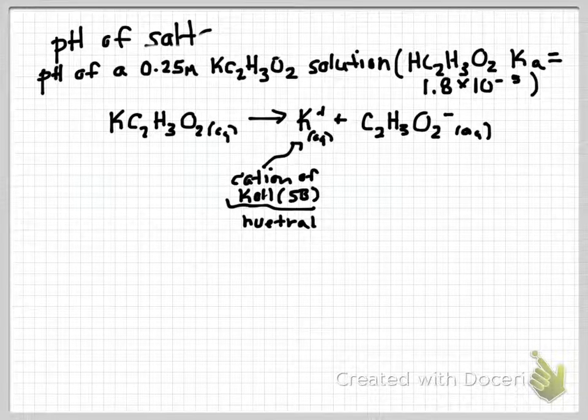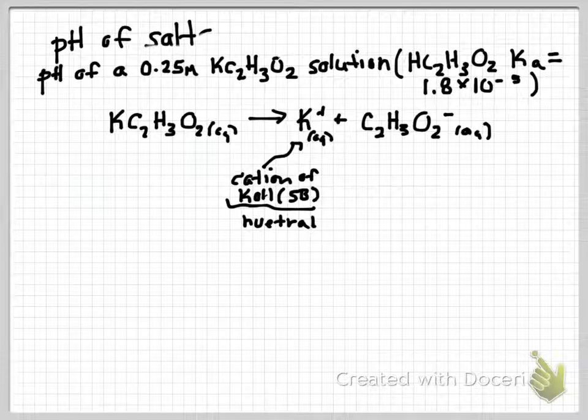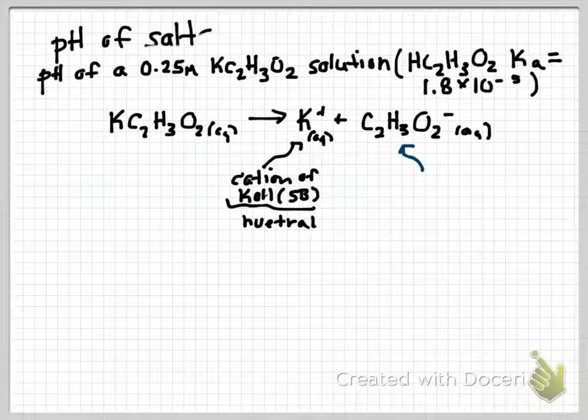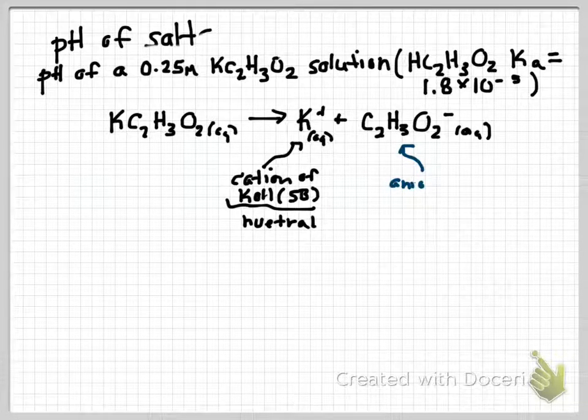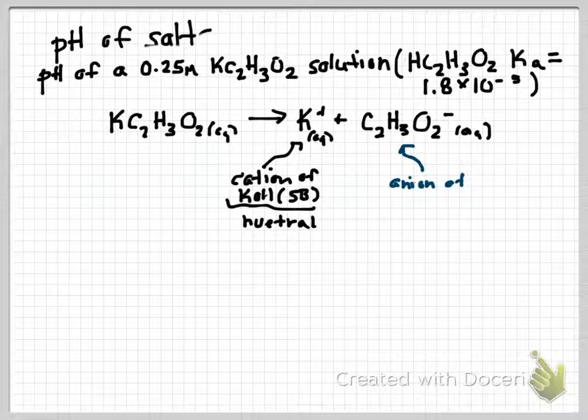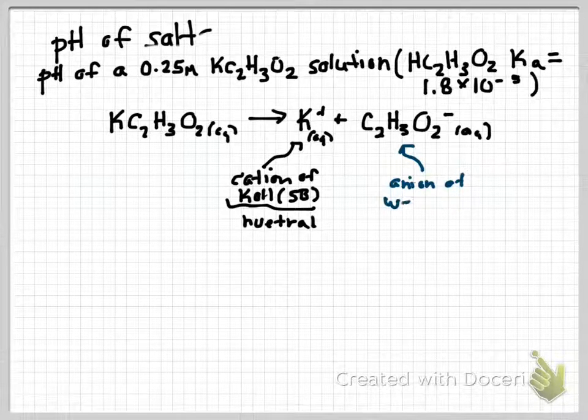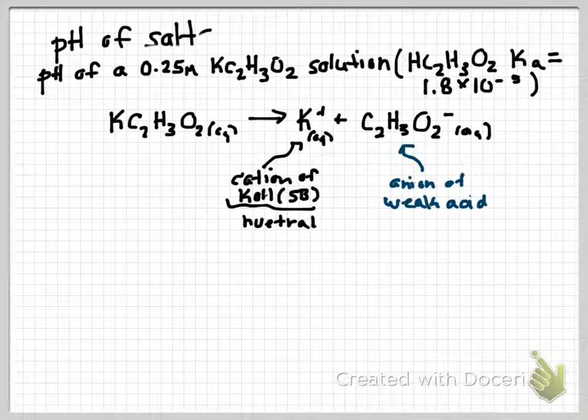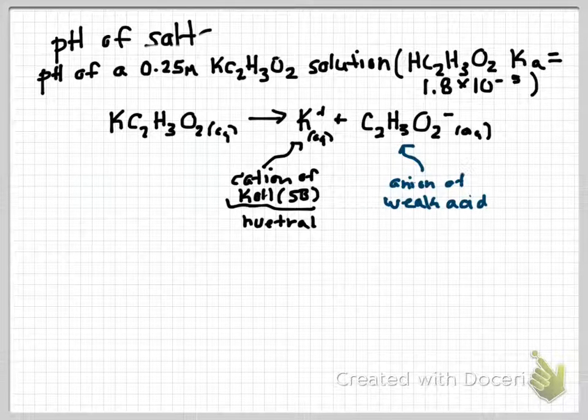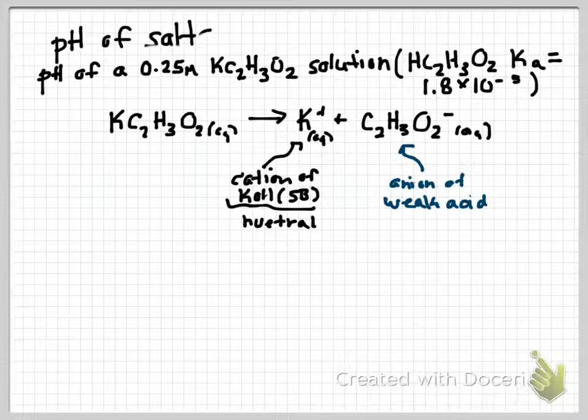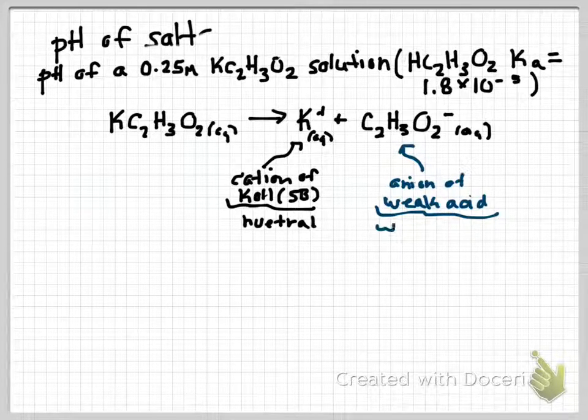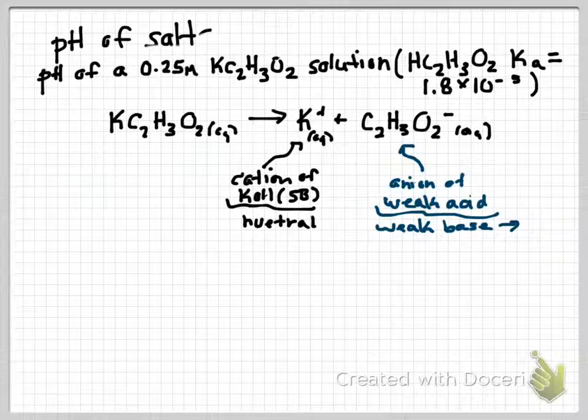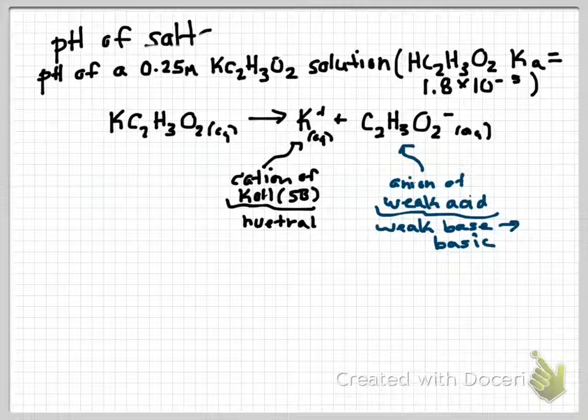When looking at our anion, our anion is going to be the anion of a weak acid, specifically acetic acid. And because of that, this anion will be a weak base. And this will give me a prediction that I'm going to have a basic solution.